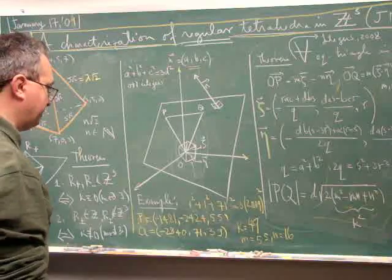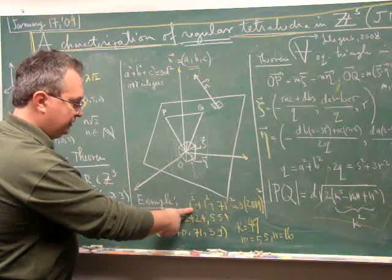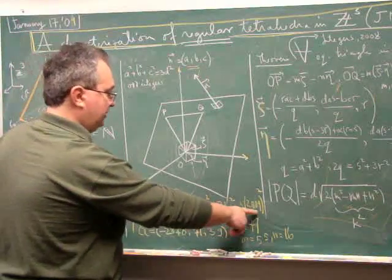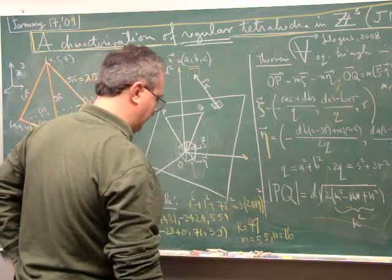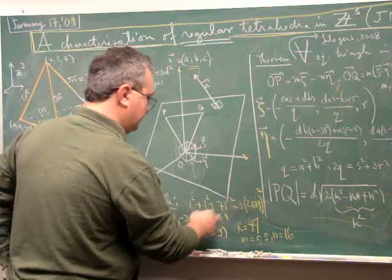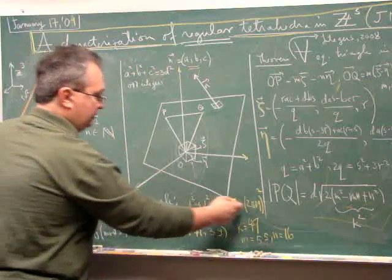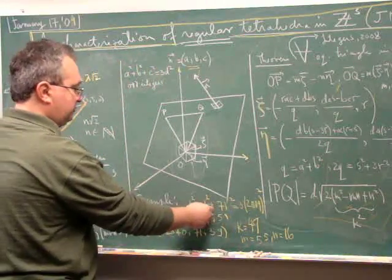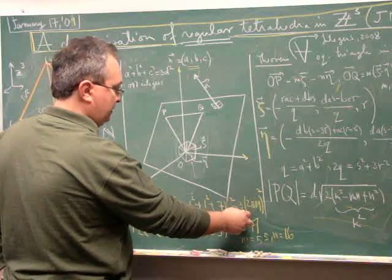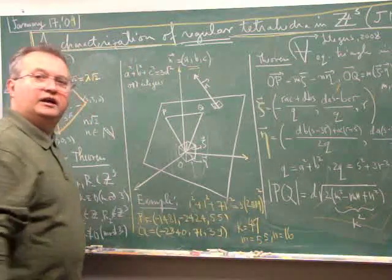For example, suppose you take D to be 2009. Then 2009 has a representation in an equation of this form: 1² + 1² + 71² = 3 × 2009².